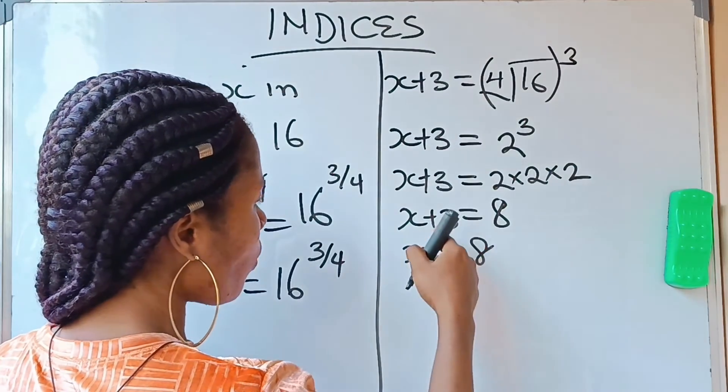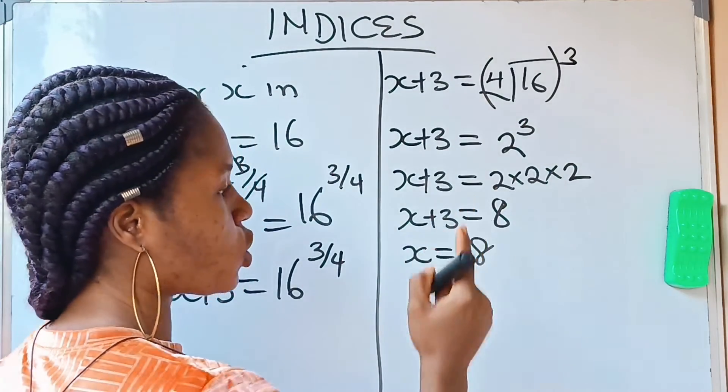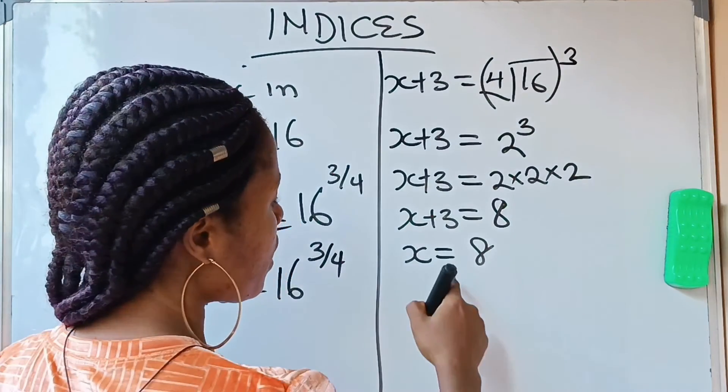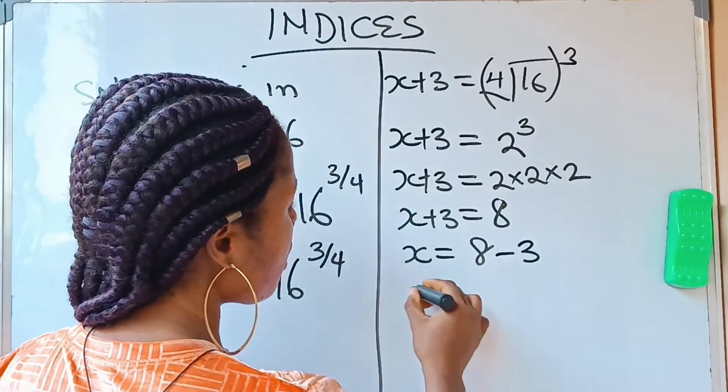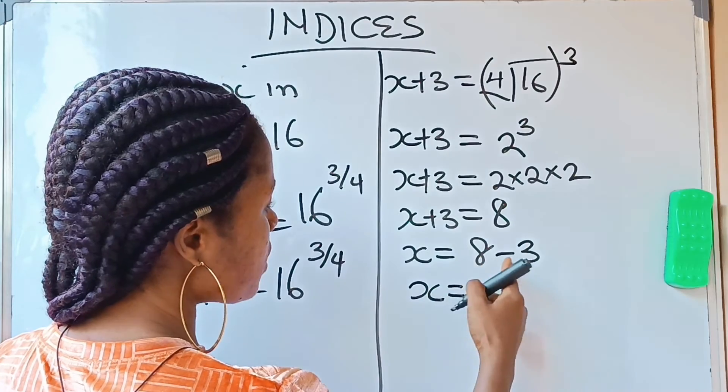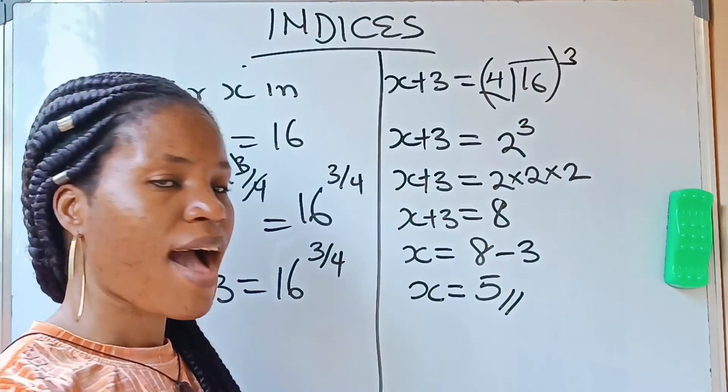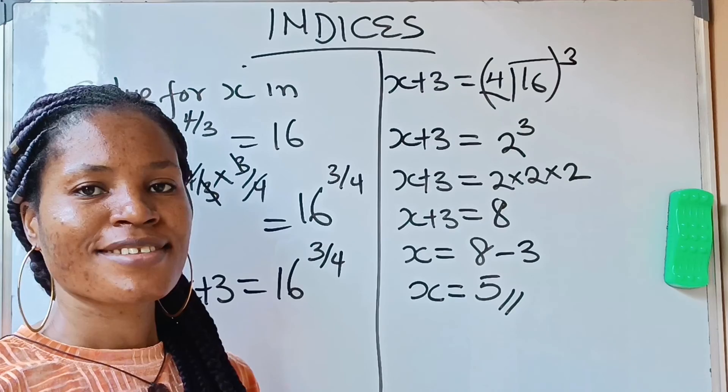That means our x is 8 minus this 3 when we cross the equation. So x equals 8 minus 3, which equals 5, and that is our final answer.